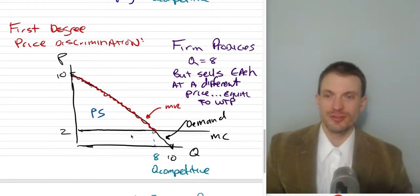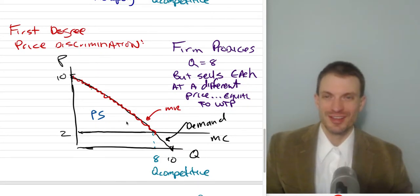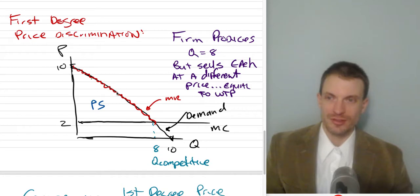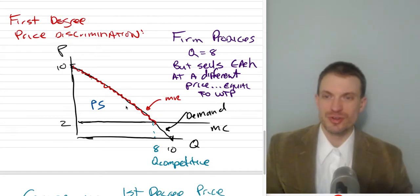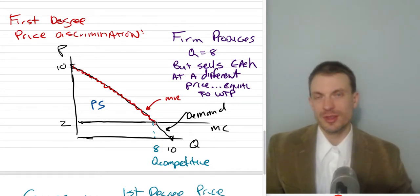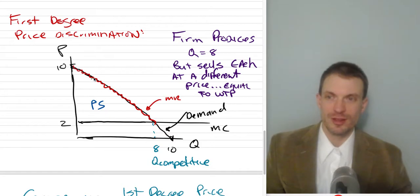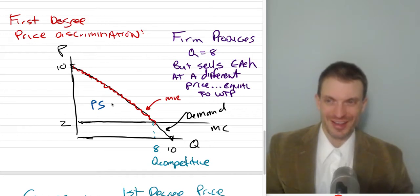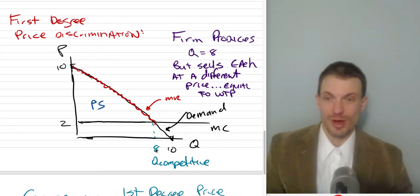Suppose the monopolist wants to capture more of that surplus and is able to practice first-degree price discrimination. If it had the information and ability to do so, it would actually produce the competitive quantity of 8 and sell to each consumer at exactly their willingness to pay. This means for the first-degree price discrimination case, the demand curve is the marginal revenue curve — each unit is sold at a different price equal to the consumer's willingness to pay, so the entire area under the demand curve becomes producer surplus.